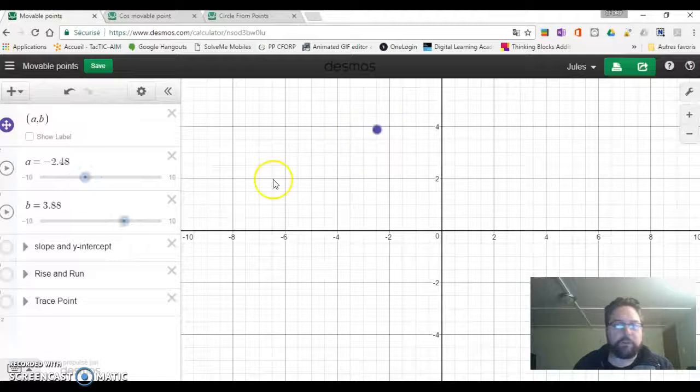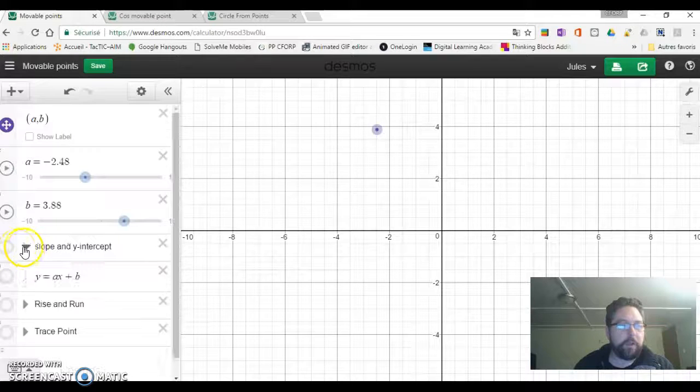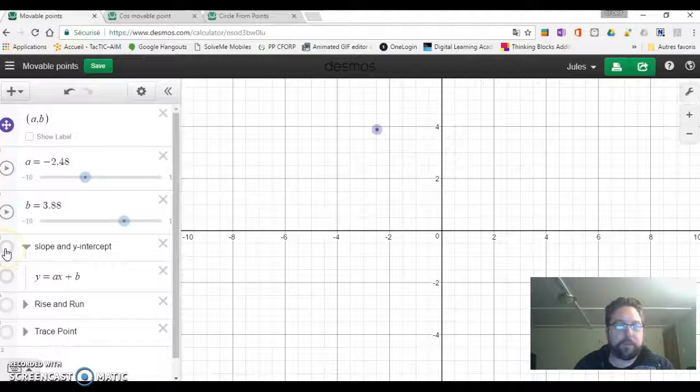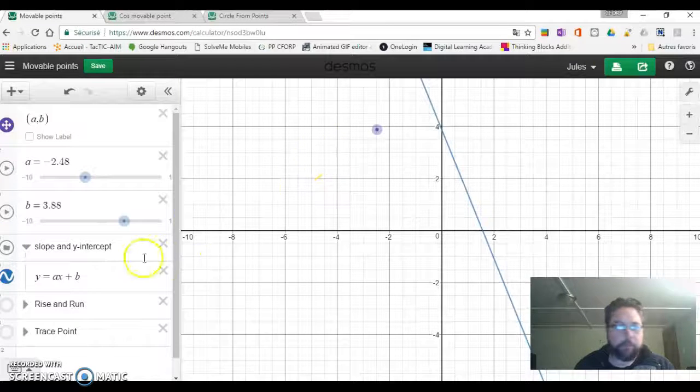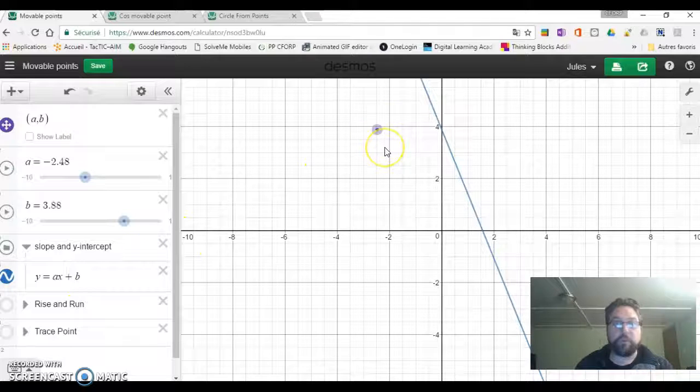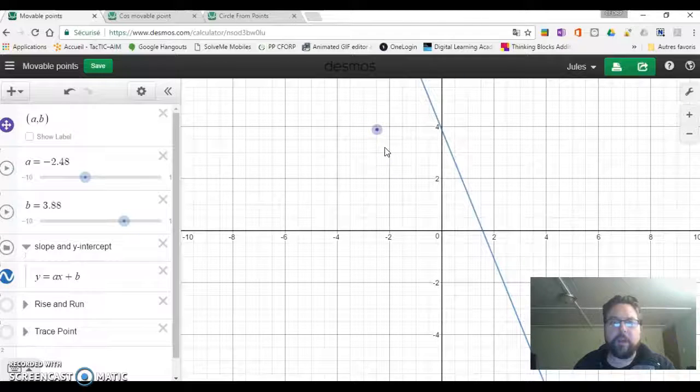Let's try something with a slope and y-intercept. If we replace A and B, the parameters, in this equation, we can easily ask the students: What do you notice? What are you wondering? What's happening here?